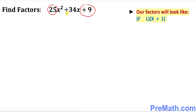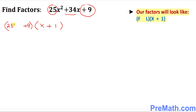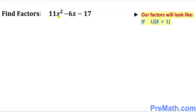How about in this example? The first number is 25, the last number is positive 9. When you add them it's supposed to be positive 34, so that means we have two factors. Once again x plus 1 is always going to be in the second factor. Here 25 is the first number, positive 9 is the last number, and you just put x next to the first number. That is your factors.